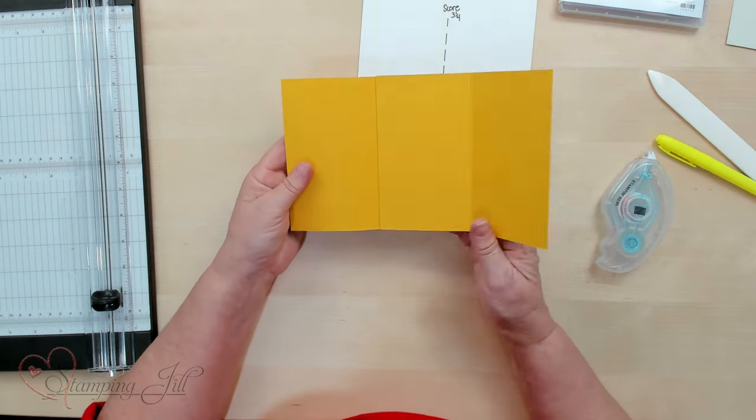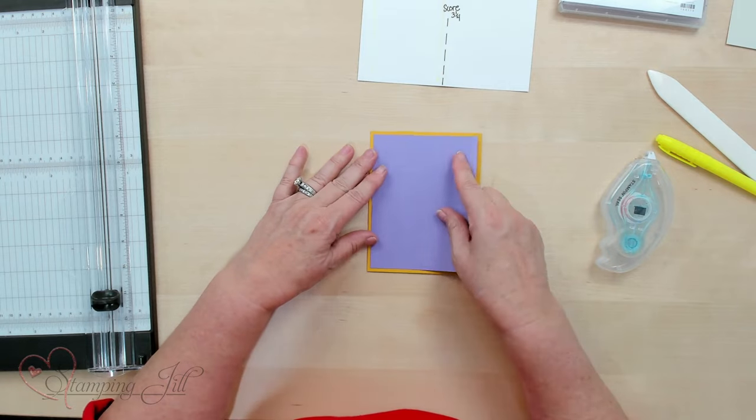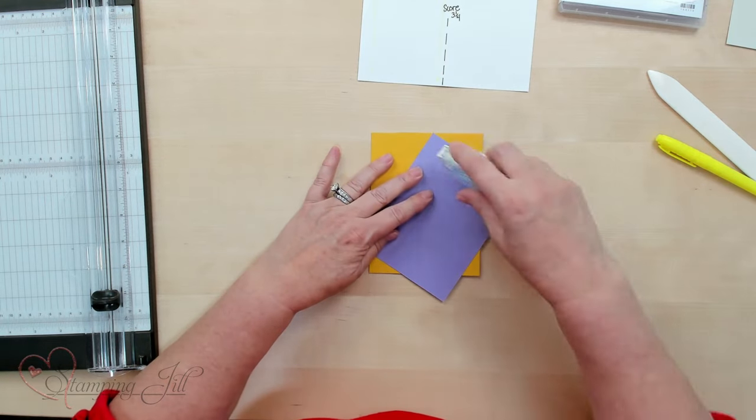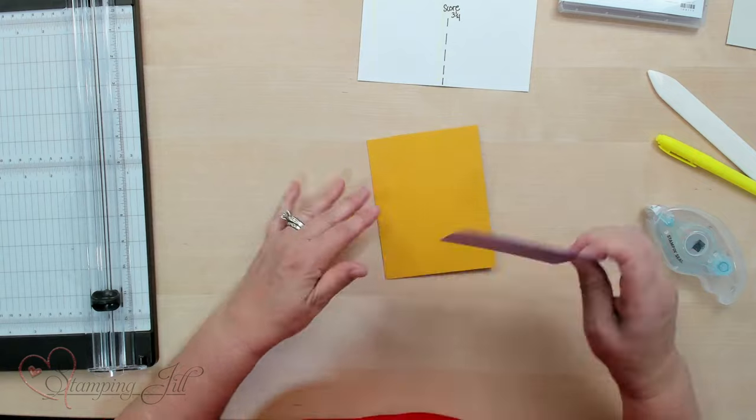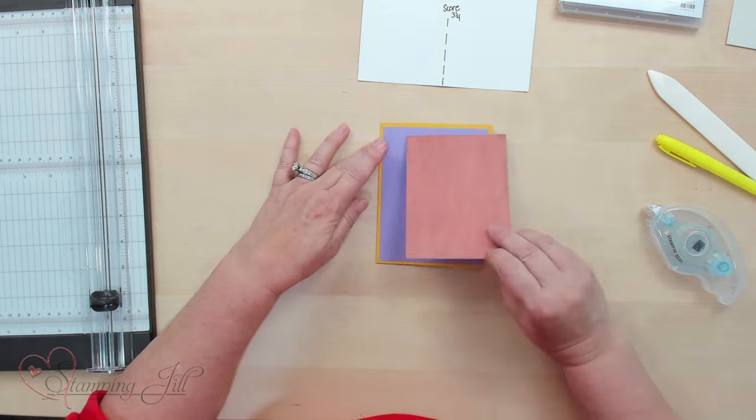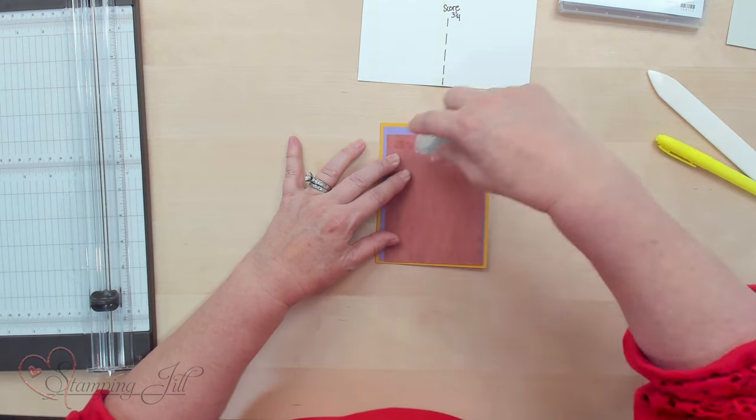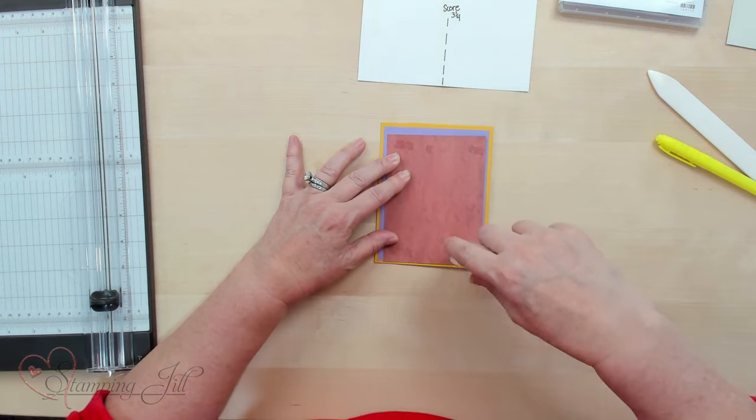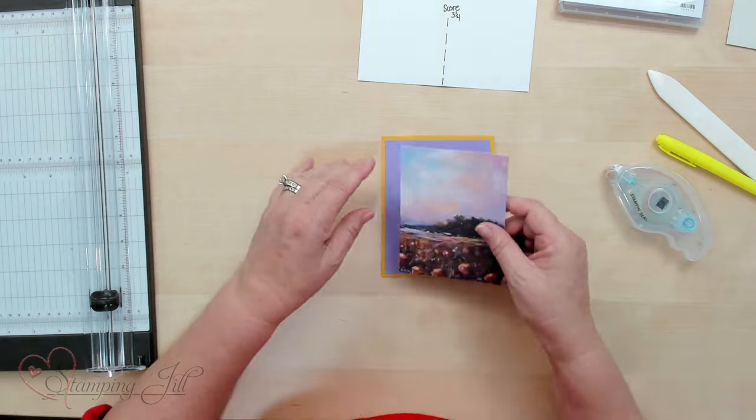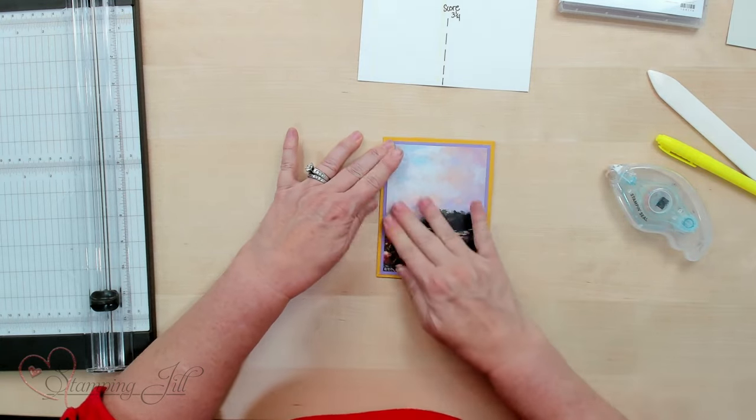So that's the cardstock part. Now we're going to decorate it. This is Crushed Curry and Highland Heather that I'm using. This piece is 4 x 5 1/4 and then I'm going to stick this one on top too as our interest for our Designer Series paper for the front of the card. This is 3 x 3/4 by 5 and that will just go in a quarter of an inch smaller than the lavender piece.